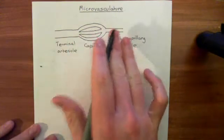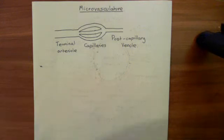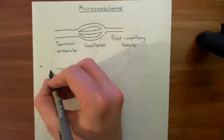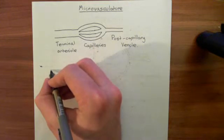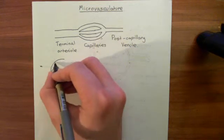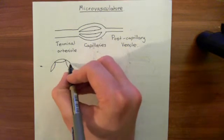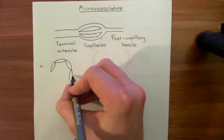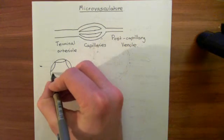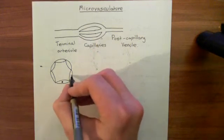Let's look at the structure of these different types of blood vessels so that we can understand what changes are going to occur in diabetic retinopathy. Starting with a terminal arteriole: terminal arterioles have two major layers. You have endothelial cells, which line the lumen of a terminal arteriole. The lumen is bigger than that of a capillary — you can fit slightly more than one red blood cell through it, but it is still a very small blood vessel.